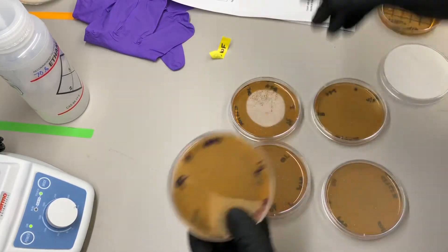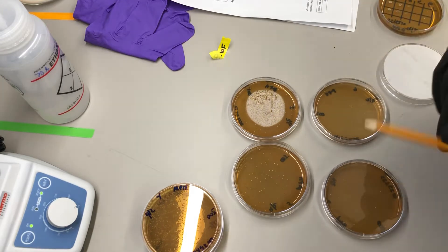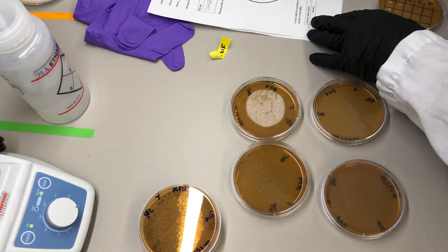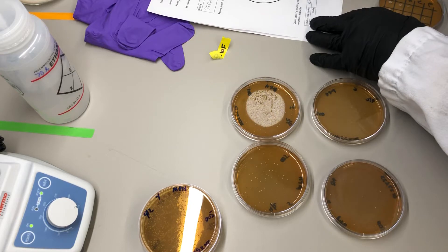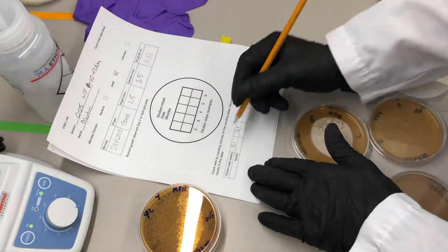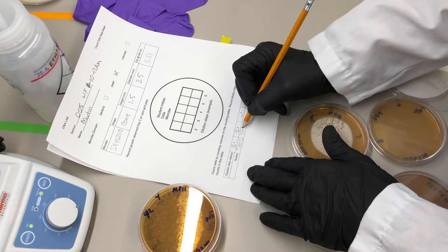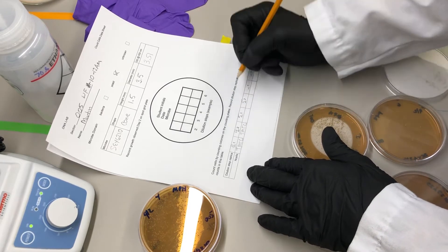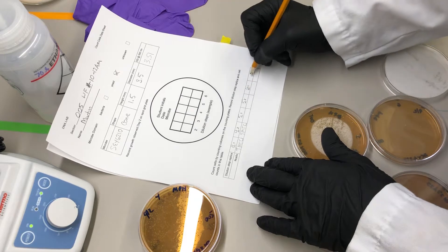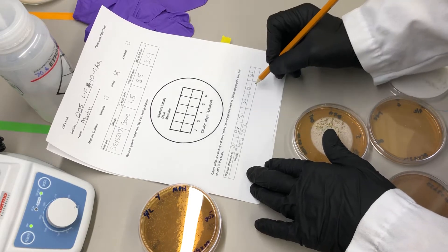These plates with a lot of cells, I'm just going to take care of right away. That's dilution step four, they had too many to count, so right here, too many to count, too many to count. And then I'll be recording numbers for dilution steps five and six for replicas one and two.